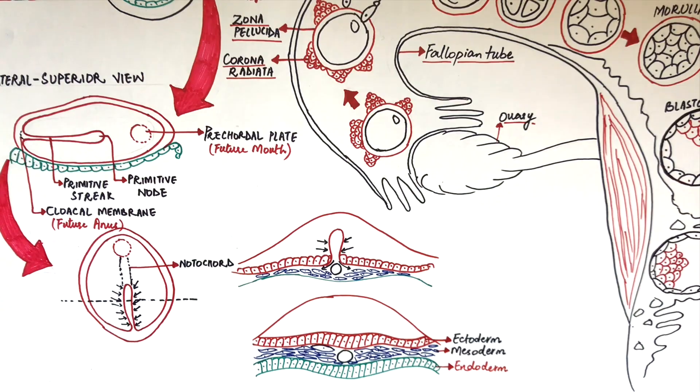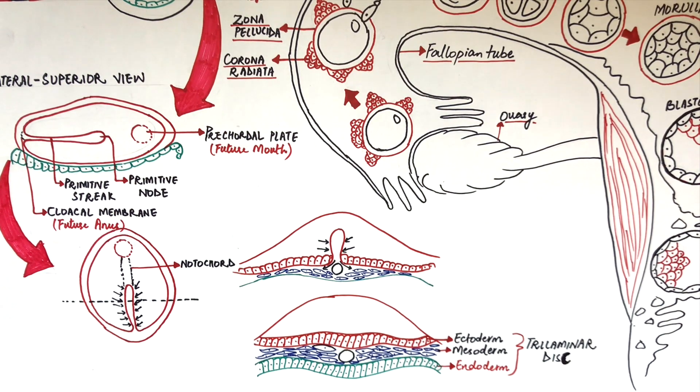All these three germ layers make up the trilaminar disc, and the process by which these three germ layers are formed is called gastrulation. Each one of these three germ layers will give rise to different structures of the human body.